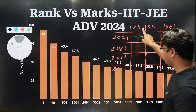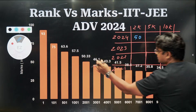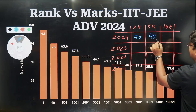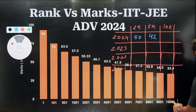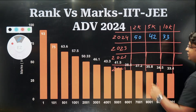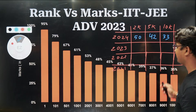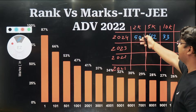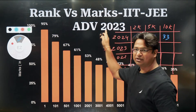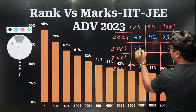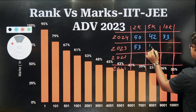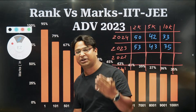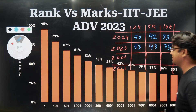For 2024: the 2k rank needed around 50%, the 5k rank needed around 42%, and the 10,000 rank needed 33%. Moving to 2023 data: for 2000 rank it is 53%, for 5000 rank it is 43%, and for 10,000 rank it is 35%. This data is picked directly from the JEE reports — no biases.